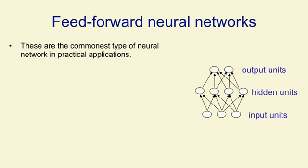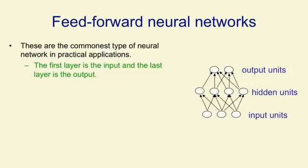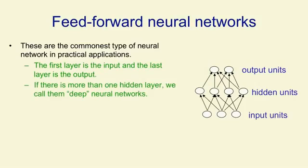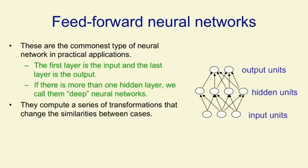The commonest type of neural network in practical applications is a feed-forward neural network. This has some input units in the first layer at the bottom, some output units in the last layer at the top, and one or more layers of hidden units. If there's more than one layer of hidden units, we call them deep neural networks. These networks compute a series of transformations between their input and their output. At each layer, you get a new representation of the input, in which things that were similar in the previous layer may have become less similar, or things that were dissimilar may have become more similar.